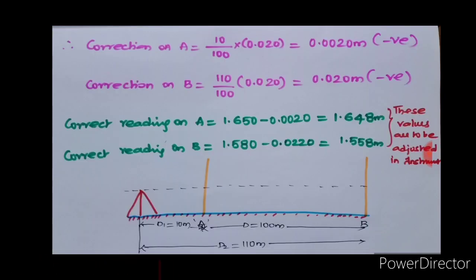See here in the figure, d1 is the distance from the second setup of instrument to the staff reading A, which is 10 meters. And d2 is instrument to the staff station B, that is 110 meters. The distance between the two staff stations is 100 meters.